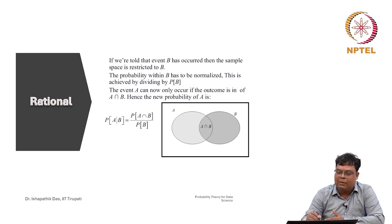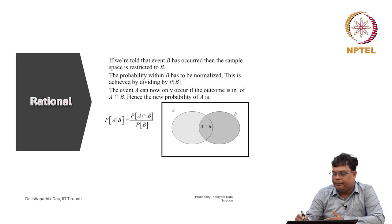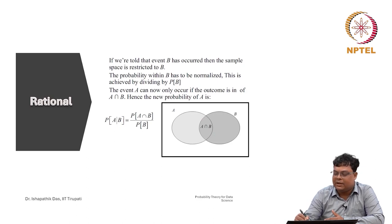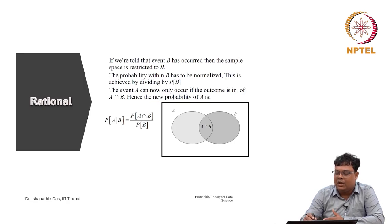The probability within B has to be normalized, and this is achieved by dividing by P(B). In this graph we can see the sample space with events A and B. Whenever B is observed, the sample points inside B are the possibilities. The proportion of A out of B gives the probability of A given B, which is P(A∩B) / P(B).